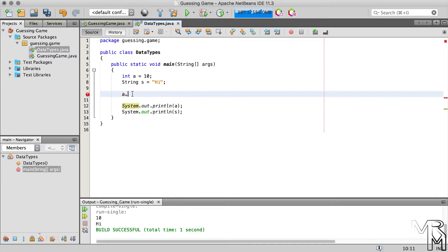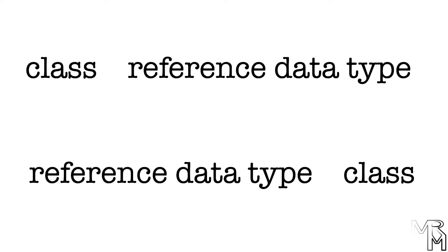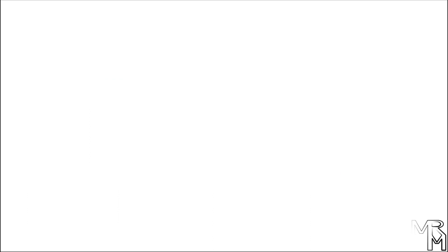In fact, all classes, including the DataTypes class we're working with at the moment, are reference data types — meaning you can declare a variable of type DataTypes. It's important to know that while all classes are reference data types, not all reference data types are classes. So there are two kinds of data types in Java: primitive and reference.